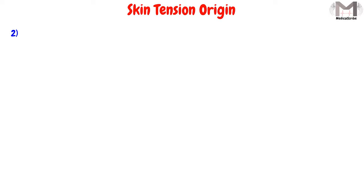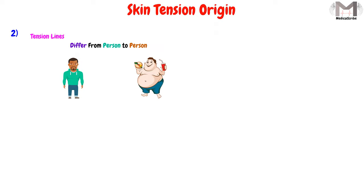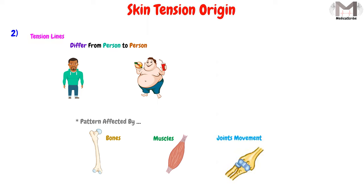The second thing we have to understand is that the skin tension lines differ from person to person. Their distribution pattern is affected by the protrusions of the bones and muscles under the skin, which of course differ from person to person. The movement of the joints will also affect these lines. These two things are the most important in understanding the origin of the skin tension lines.